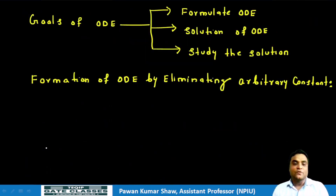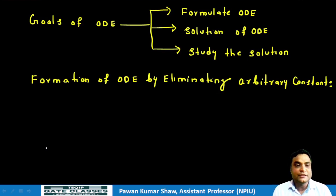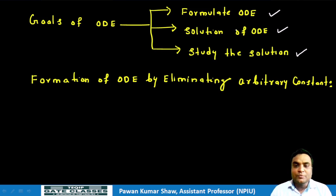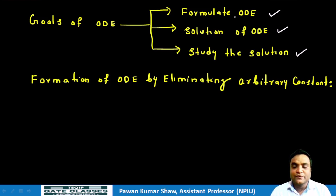First, we will see the formation of a differential equation by elimination of arbitrary constants. Before starting, we will understand the three goals of a differential equation: we can formulate a differential equation, we can find the solution, and we can study the solution. From the GATE point of view, the formation and solution of a differential equation are very important; studying the behavior of the solution is less emphasized.